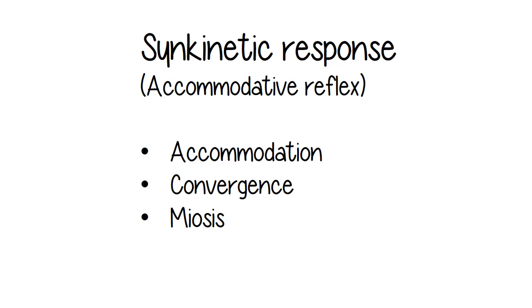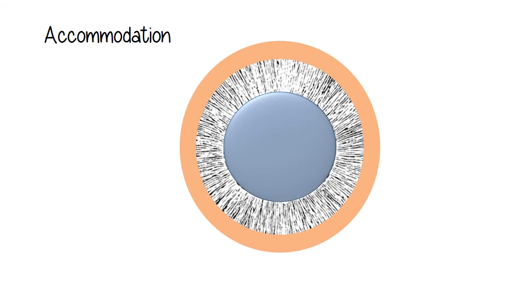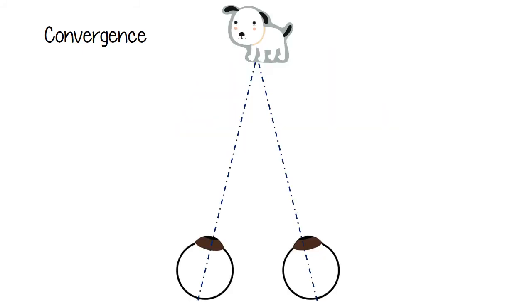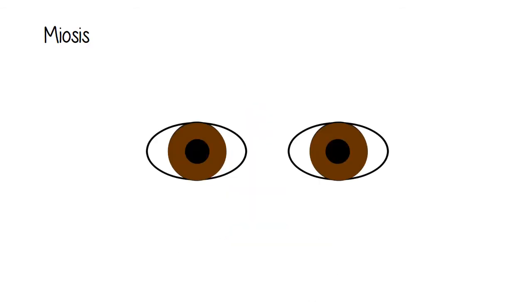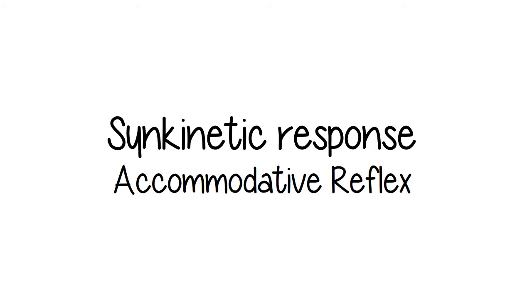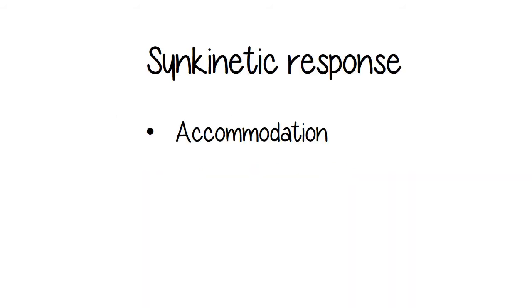There are three associated responses to near vision. We discussed accommodation. Convergence is when the eyes rotate inward to see the object. Meiosis is pupillary constriction. And together, these three things are referred to as, sometimes they're referred to as the accommodative reflex. It's not a true reflex, but it's sometimes called that. Sometimes it's called the synkinetic response.